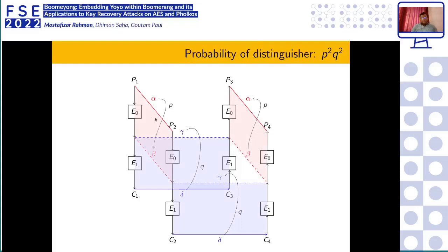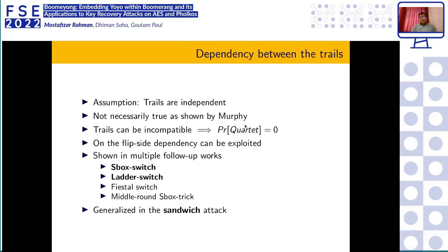The probability of such a distinguisher requires paying probability p for the first differential, probability q² for the two lower-trail differentials, and probability p again — giving a total probability of p²q². In the classic Boomerang attack the two trails are assumed independent, but Murphy later showed these trails are sometimes not independent — some attacks were reported but then shown to be incompatible. This dependency can be exploited to cover more rounds, via the S-box switch, ladder switch, pistol switch, middle-round S-box switch, and more generally in the sandwich attack.